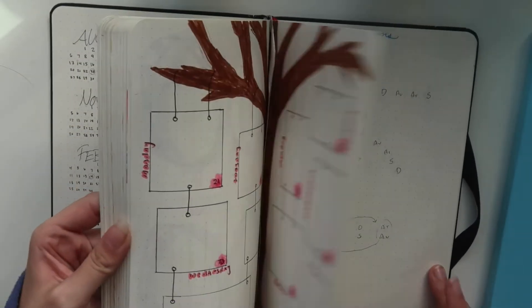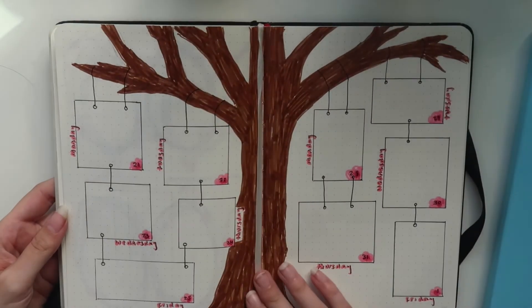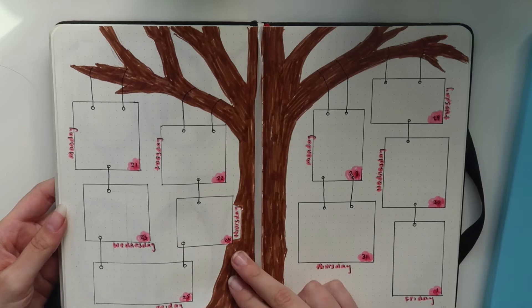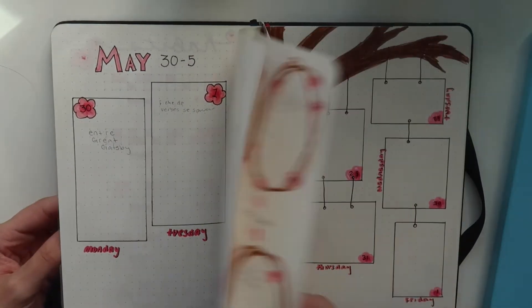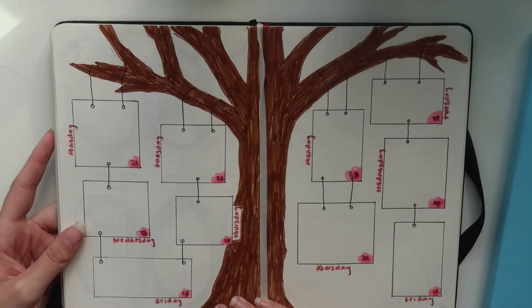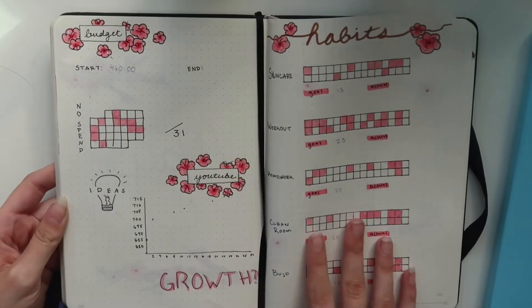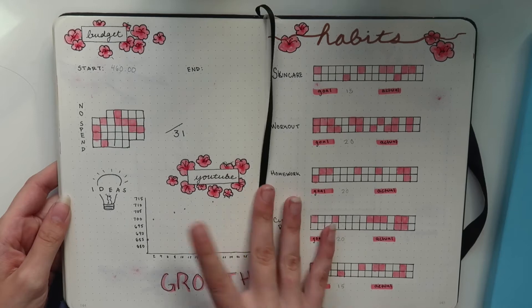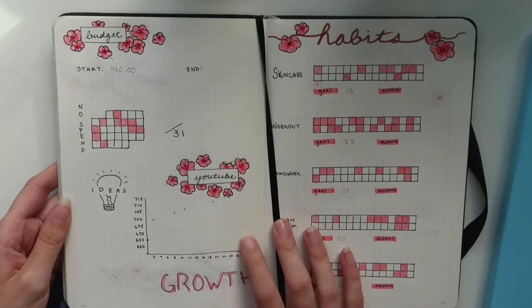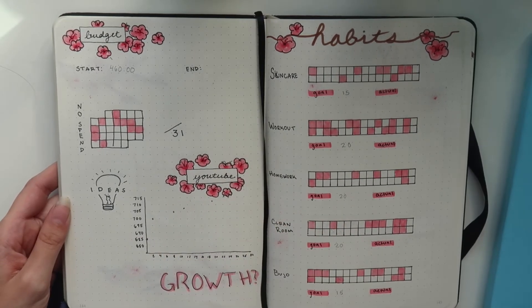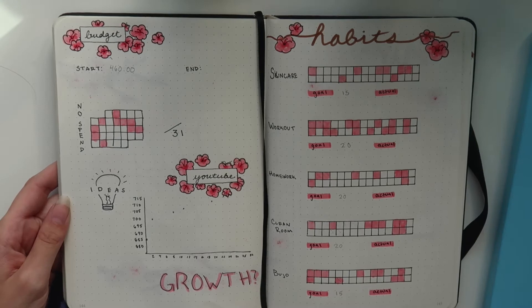May wasn't super full for me because I just didn't have any schoolwork really. This last couple months of May, I had a bit but just not really that much, so there's some blank spreads in here. But I really made use of my habit trackers. That was really helpful for me. My YouTube growth thing, I definitely should give myself a little more credit. I definitely surpassed that goal pretty quickly.